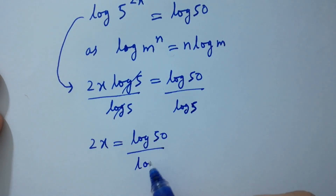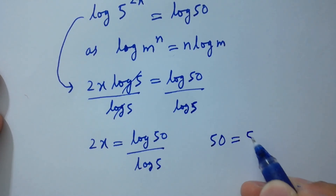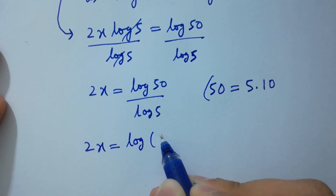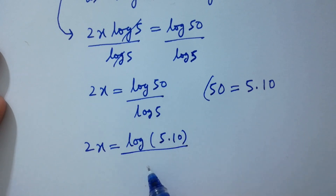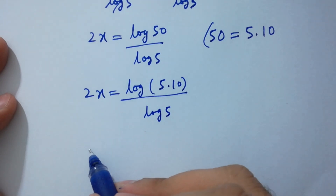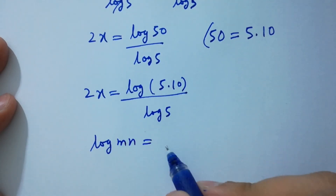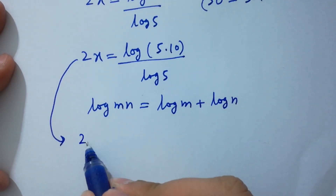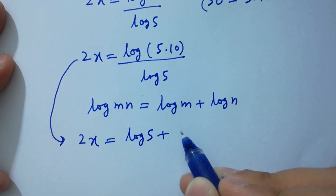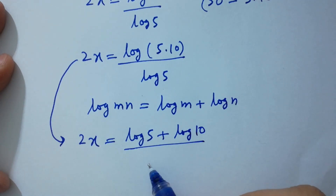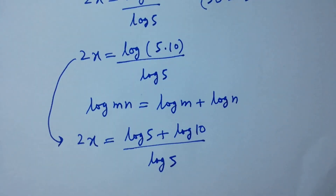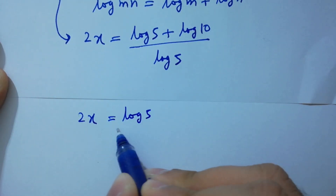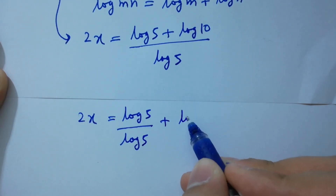Since 50 equals 5 times 10, we have 2x equal to log(5 times 10) over log 5. Using the rule log(mn) equals log m plus log n, 2x equals log 5 plus log 10, all over log 5.